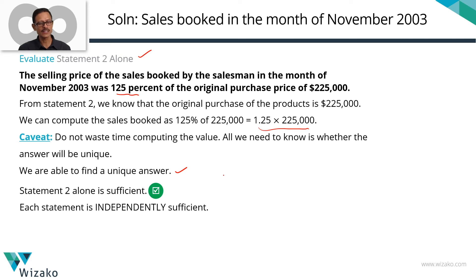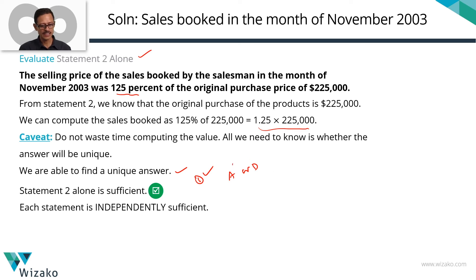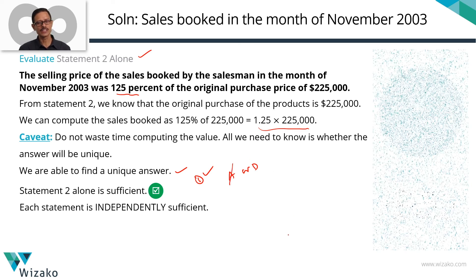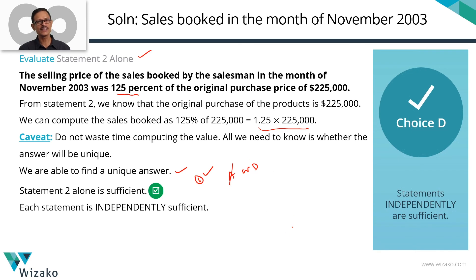At the end of evaluating statement 1, we were left with A or D because statement 1 was sufficient. Now that statement 2 is also sufficient, let's eliminate answer option A. Choice D is the correct answer to the question.